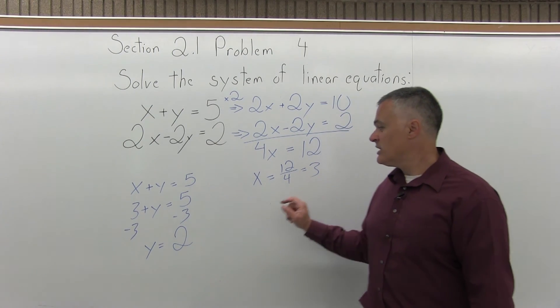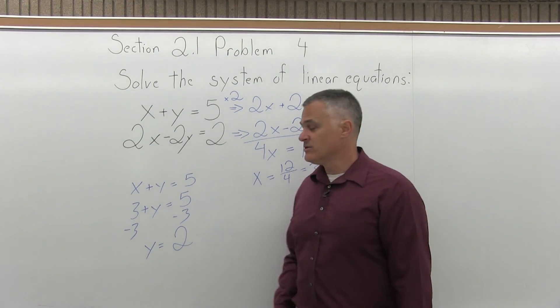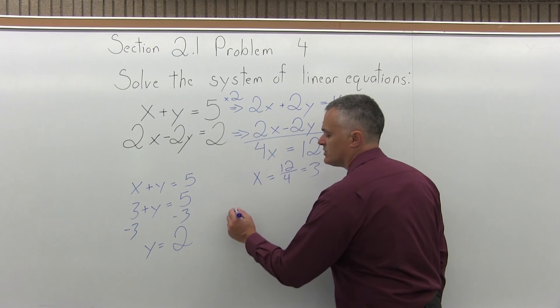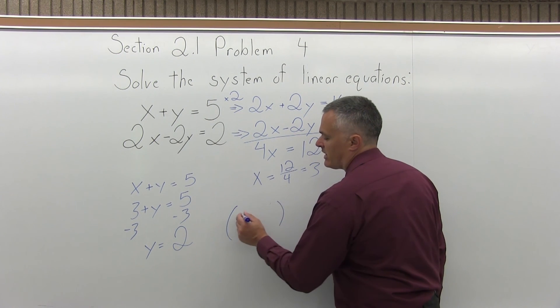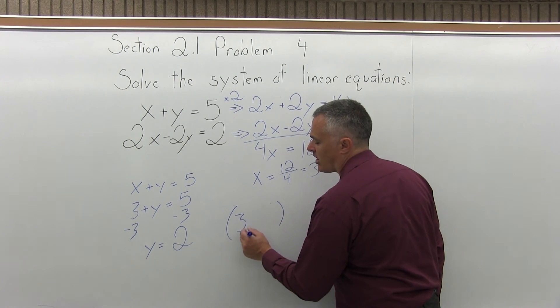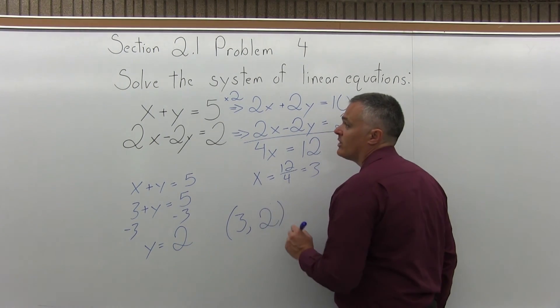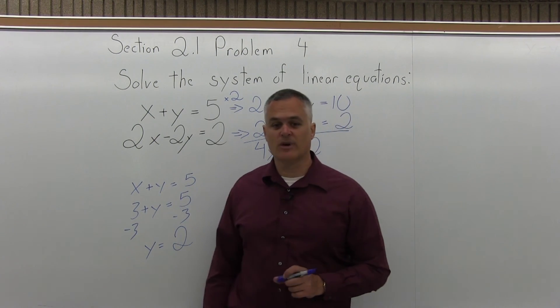So x is 3, y is 2. That's the solution for the system of linear equations. Or you can think of it this way. The point 3 comma 2 is the point where the two lines would intersect if you had the graph.